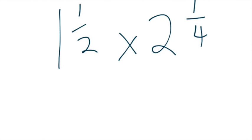Let's say we have mixed fractions. So one and a half times two and a quarter. First, we turn them into improper fractions, so top-heavy fractions.